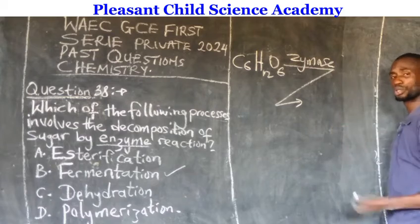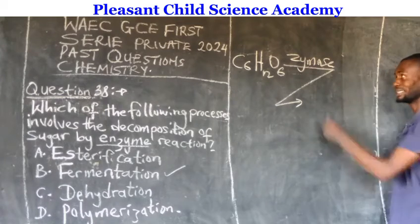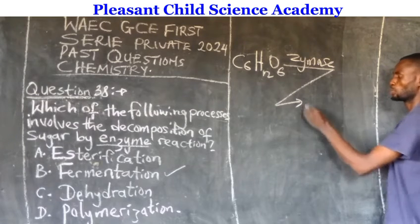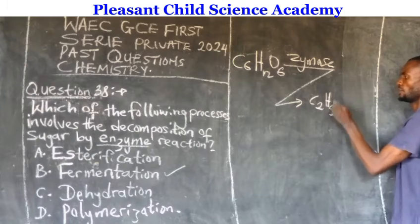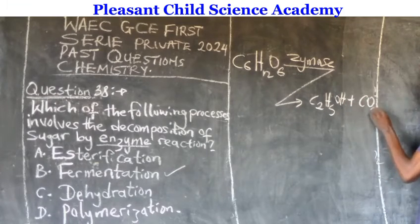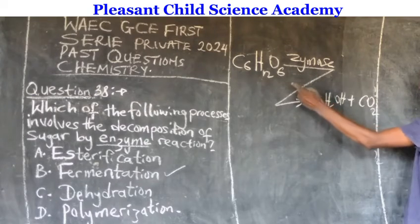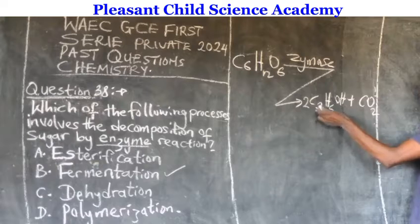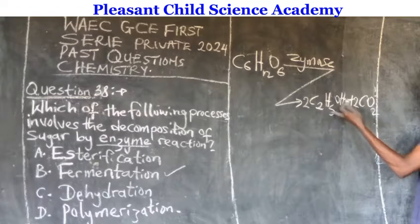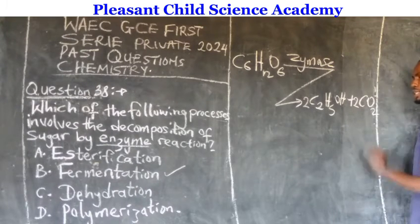This sugar will decompose in the presence of zymase, which is known as yeast, to produce ethanol (C₂H₅OH) and carbon dioxide, which is the gas produced. This is the chemical equation for fermentation. To balance it, two moles of ethanol and two moles of carbon dioxide are produced during the process.